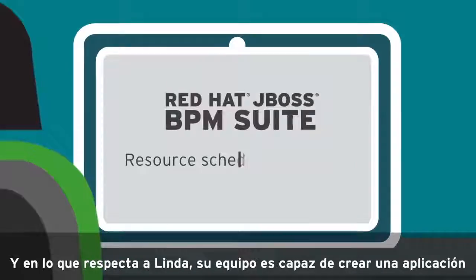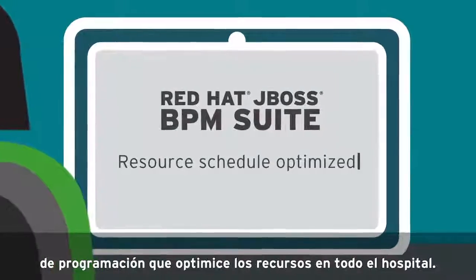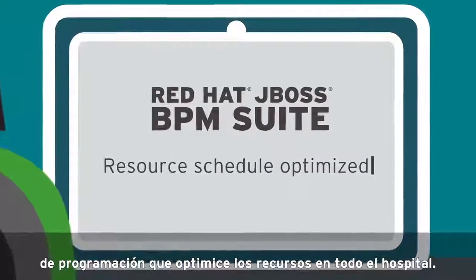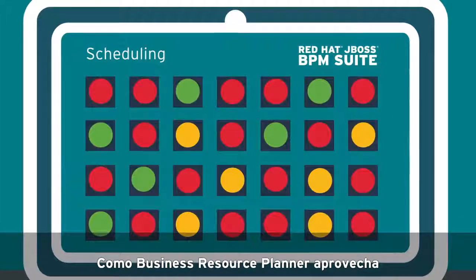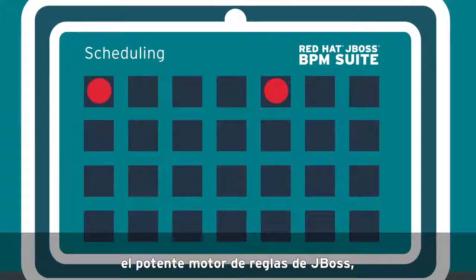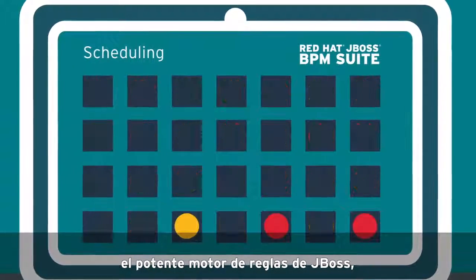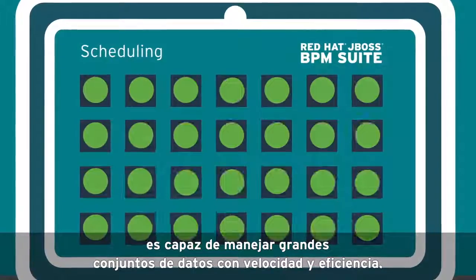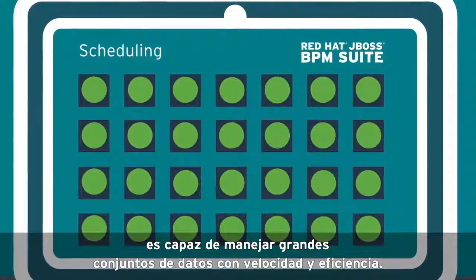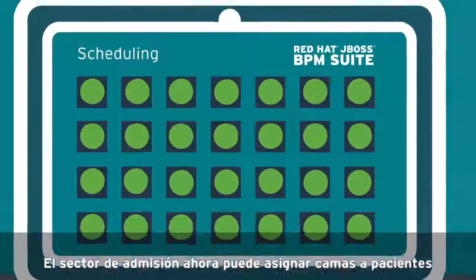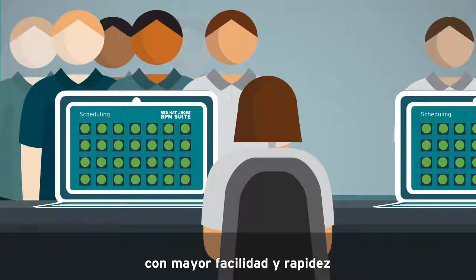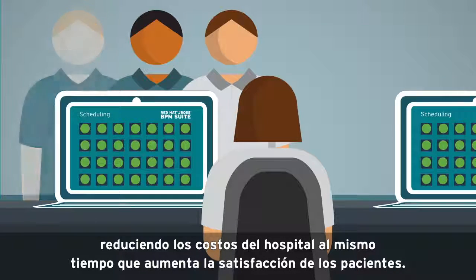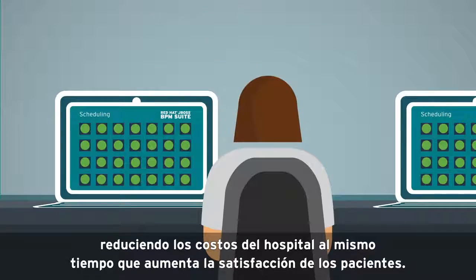As for Linda, her team is able to create a scheduling application that optimizes resources hospital-wide. Because Business Resource Planner leverages the powerful JBoss rules engine, it can handle massive data sets with speed and efficiency. Now admissions can more quickly and easily assign patients to beds, reducing hospital costs while increasing patient satisfaction.